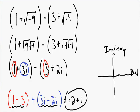Last but not least, let's graph this complex number. We have a real number of negative 2, which means we go 2 units to the left in the real direction. We have an imaginary number of 1i, which means we go up 1 unit in the imaginary direction. So if we go to the left 2 and up 1, our point should be somewhere around there. And now we have plotted this complex number.